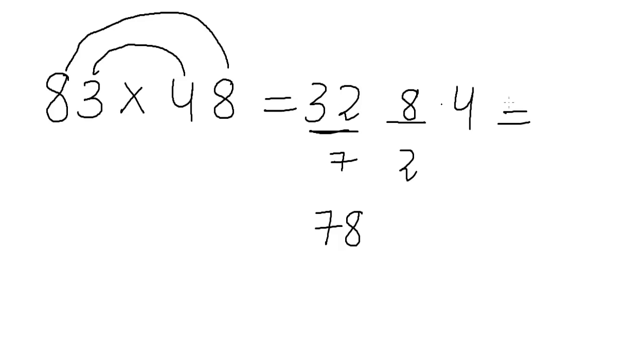So 32 plus 7 will be 39. And rest will remain the same. 3984 which is our answer.